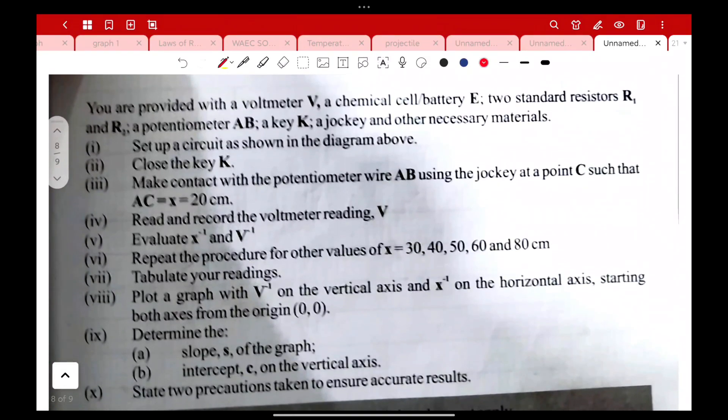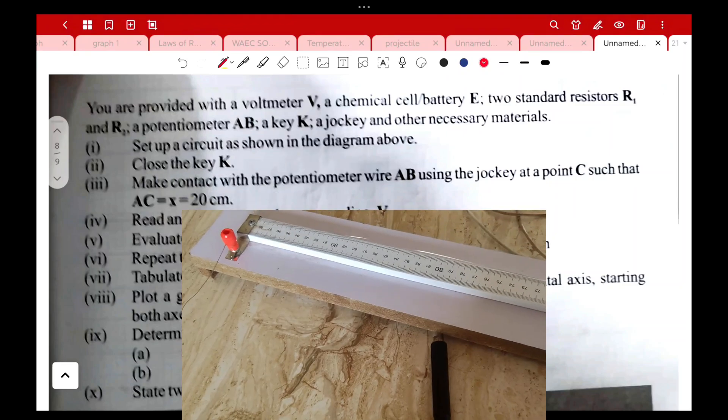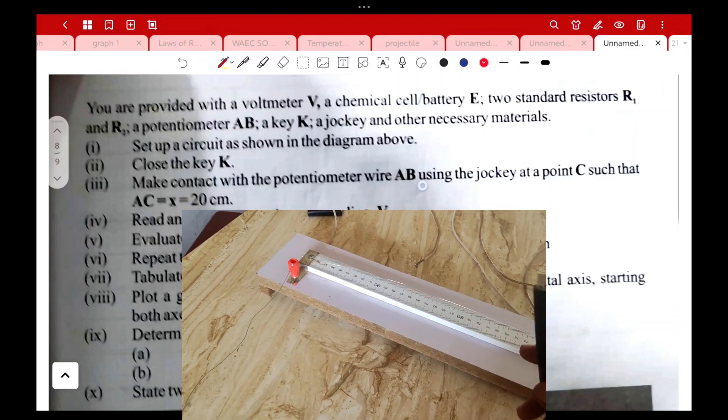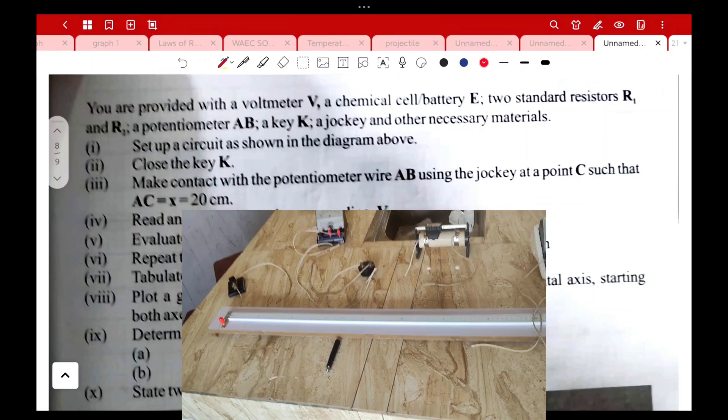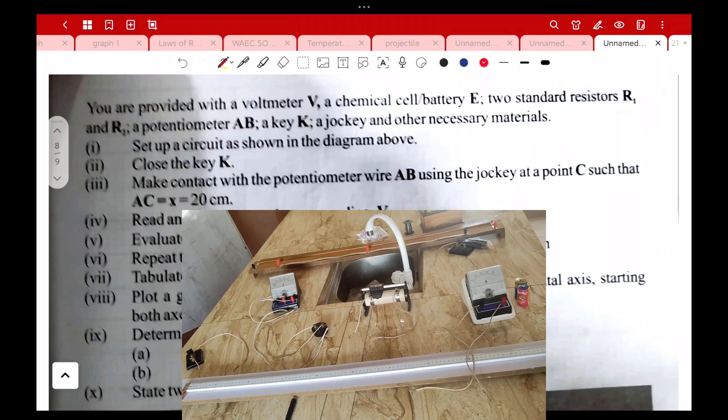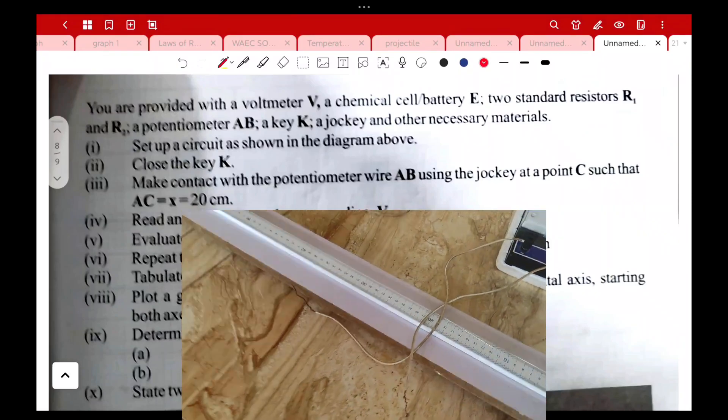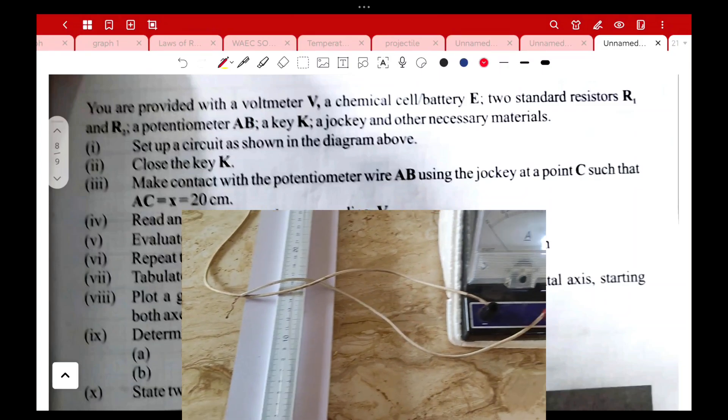These are the instructions: you are provided with a voltmeter V, a chemical cell battery E, two standard resistors R1 and R2, a potentiometer AB, a key, and a jockey. Set up a circuit as shown in the diagram. Close the key K and make contact with the potentiometer wire AB using the jockey at the point C such that AC is equal to 20 centimeters.